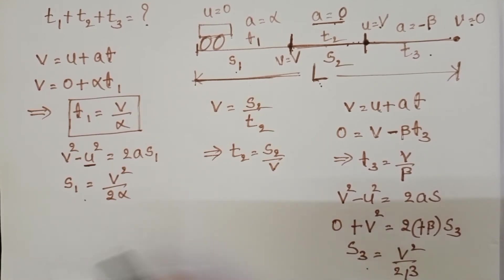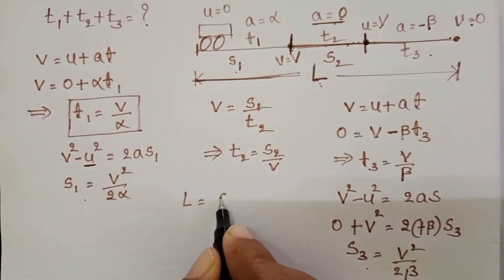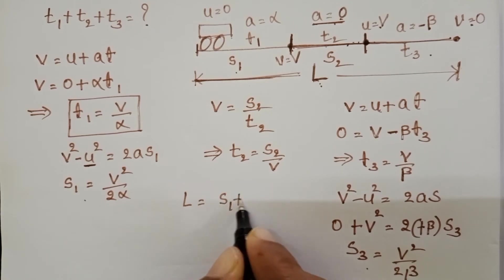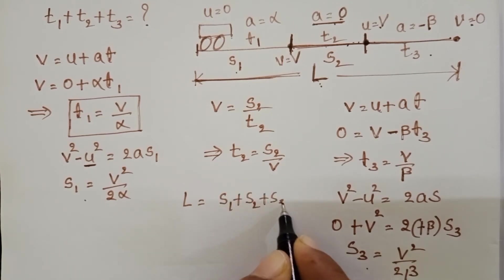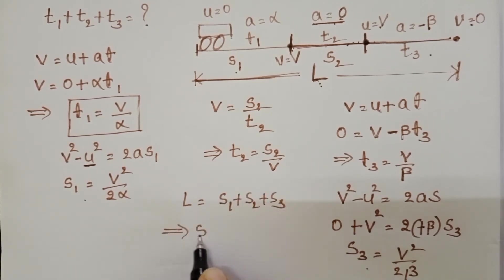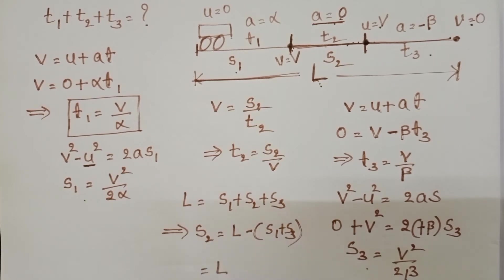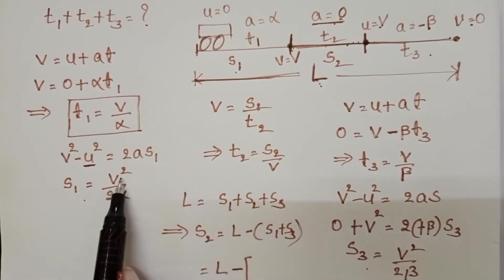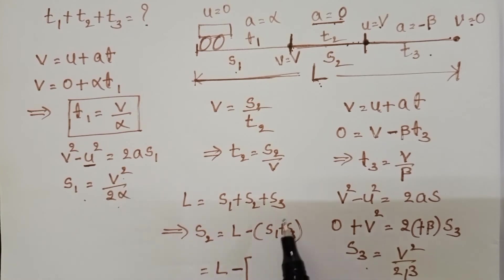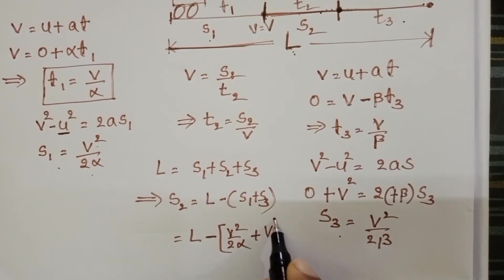We know S1 and S3. Total distance is L, so L equals S1 plus S2 plus S3. From this, S2 equals L minus (S1 plus S3), which gives S2 equals L minus v²/2alpha minus v²/2beta.